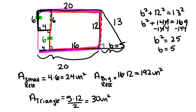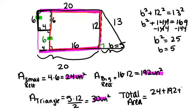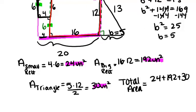So that means that the area of the full shape, the original shape, before we broke it down, would be the sum of all three of the parts. So the total area equals 24 plus 192 plus 30, which is 246 units squared.